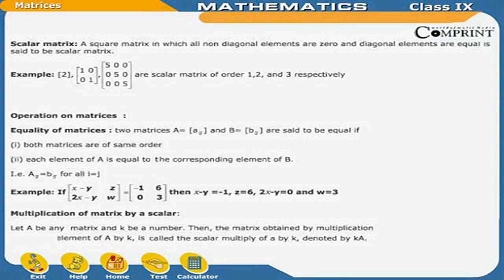Multiplication of a matrix by a scalar: Let A be any matrix and K be a number. Then the matrix obtained by multiplying each element of A by K is called the scalar multiple of A by K, denoted by KA.